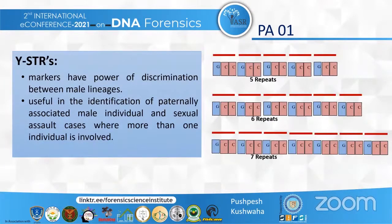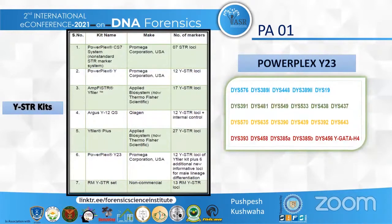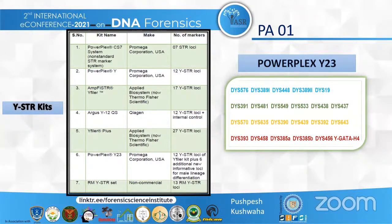Our interest was basically on Y-STRs. They are short tandem repeats on the Y chromosome and are only carried by male individuals generation by generation, transferred from one generation to the other without any change. Y-STRs are a valuable tool to trace familial relationships among males, in identification of missing persons, in paternity cases, and in sexual assault cases where more than one individual is involved. The PowerPlex Y23 kit was the one we used for our study, comprising 23 Y-STR markers.